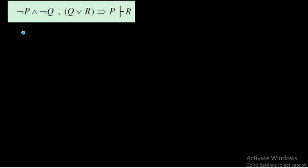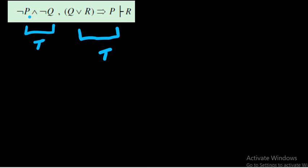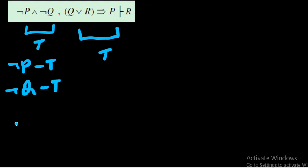For part (b), we have two premises: ¬p∧¬q (true) and (q∨r)→p (true). Since the first premise is a conjunction and is true, both ¬p and ¬q must be true, which means p is false and q is false.